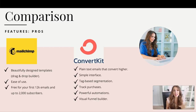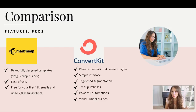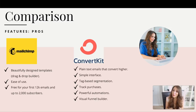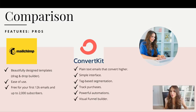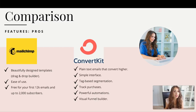The third pro is tag-based segmentation. I love that ConvertKit gives you tagging, which used to only be available for more advanced tools like ActiveCampaign. In the early days, the only real tool that let you do that was Infusionsoft, which started at around $500 a month plus a $2,000 setup — totally inaccessible for most entrepreneurs. Now we have so many more options, and tag-based segmentation is available on ConvertKit.